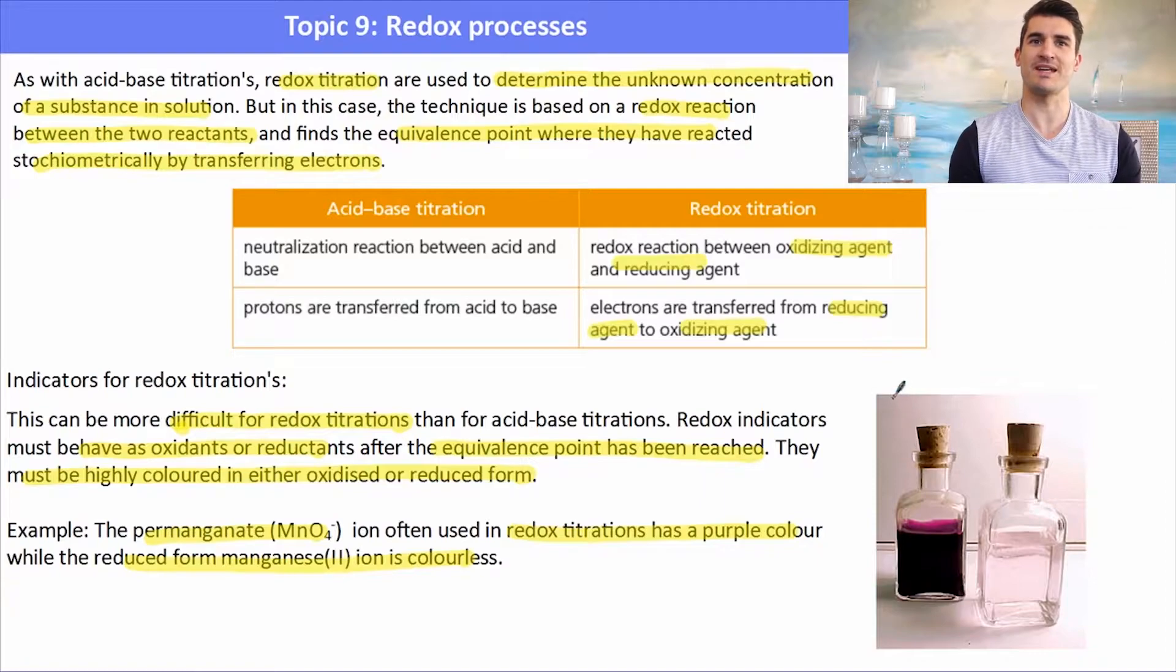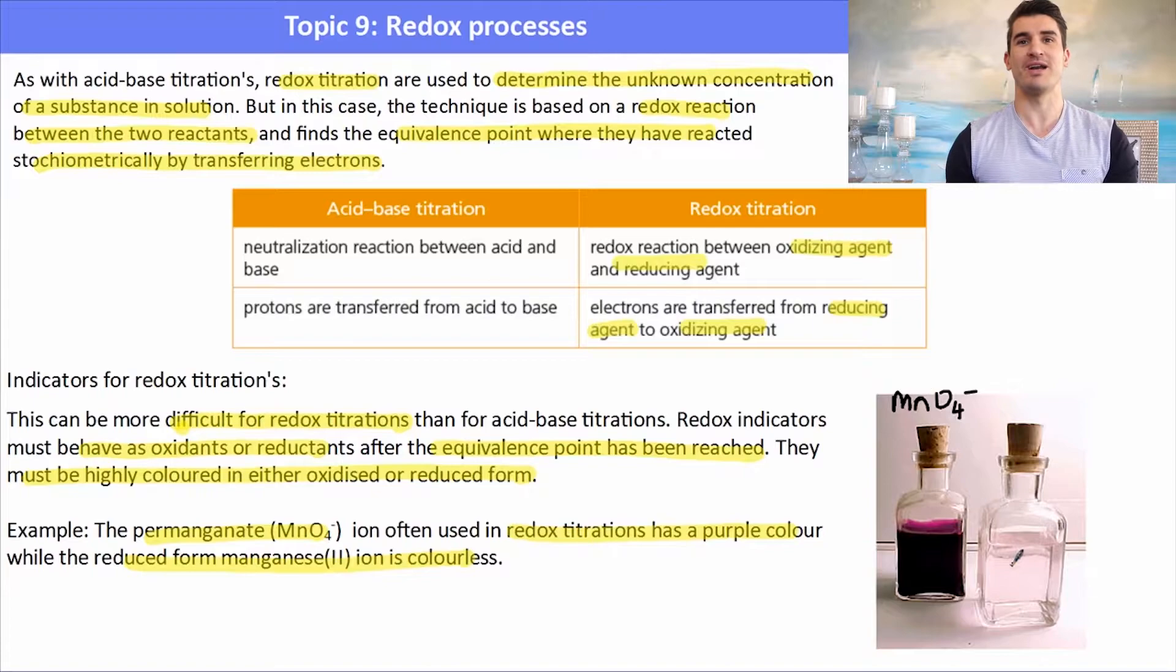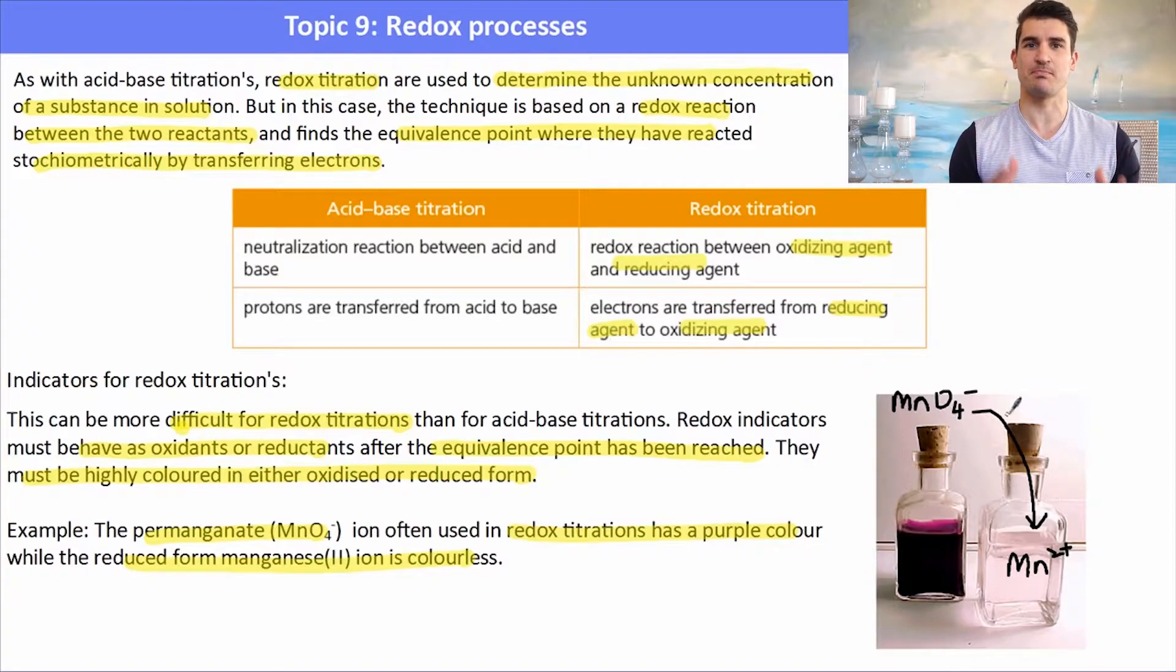So for instance the permanganate ion MnO4⁻ is a purple color and when it is reduced to Mn²⁺ it's a clear color. So we can see a color change just based on the species themselves, so we don't need to add an indicator usually.